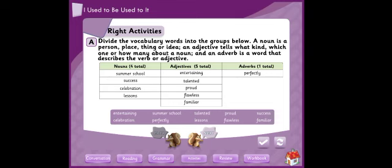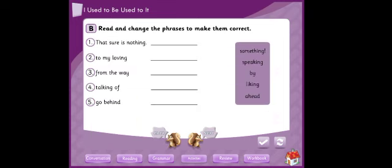Now let's move to exercise B. Read and change the phrases to make them correct. You have phrases that appeared in our lesson on page 46, but they are written incorrectly here and we need to correct them. Number one: that sure is nothing. This phrase appeared in the lesson as 'that sure is nothing' - no, it's wrong. The correct answer is 'that sure is something.' So we cross out nothing and replace it with something.